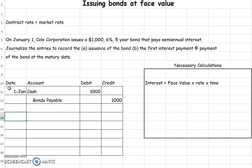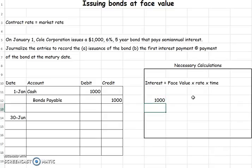On our first semiannual interest payment, which comes six months later on June 30th, we are going to pay our first interest. We always pay interest on the face value of the bond, which is $1,000. Our rate is 6%, and the time is a half a year — I'll write that as 6/12.